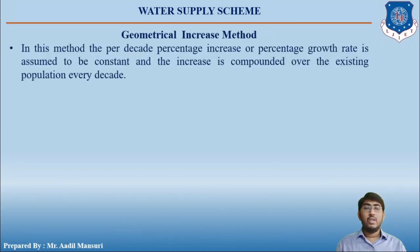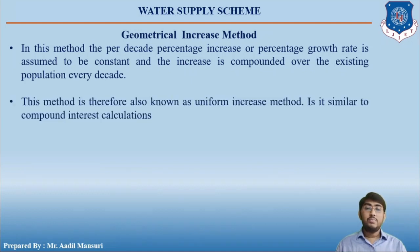In the geometrical increase method, the per decade percentage increase or percentage growth rate is assumed to be constant, and the increase is compounded over the existing population every decade. This method is therefore known as the uniform increase method, and it is similar to compound interest calculations.